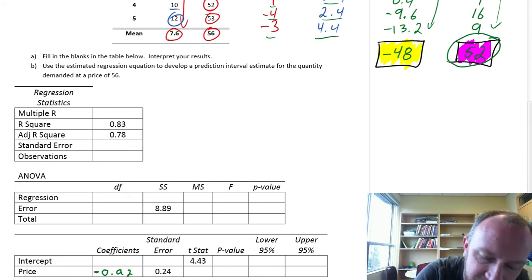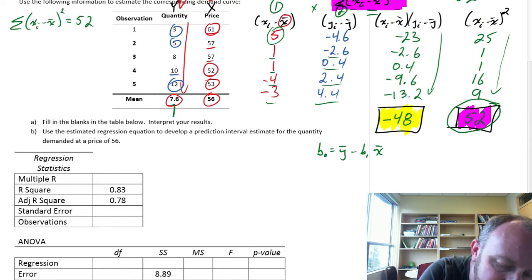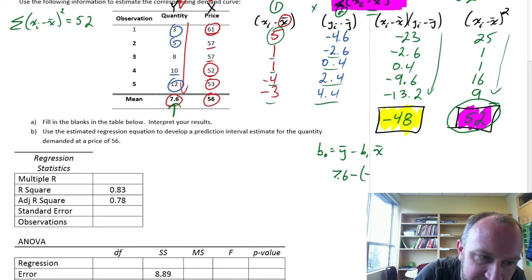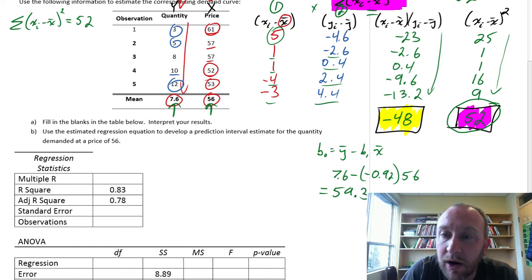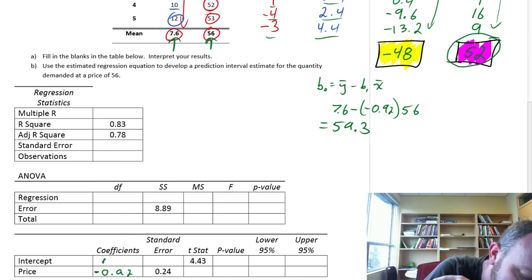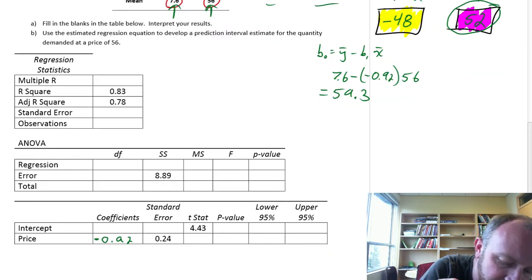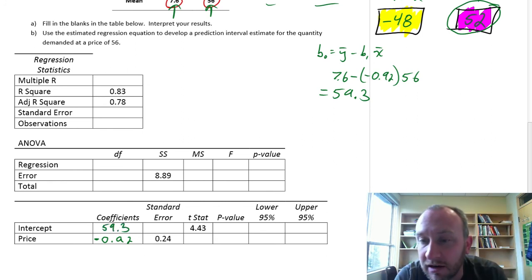Our next part is to calculate our intercept. The intercept term is y bar minus b1 times x bar. Y bar is 7.6 minus our slope coefficient, which was negative 0.92, times x bar, which is 56. This equals 59.3 as our y-intercept.